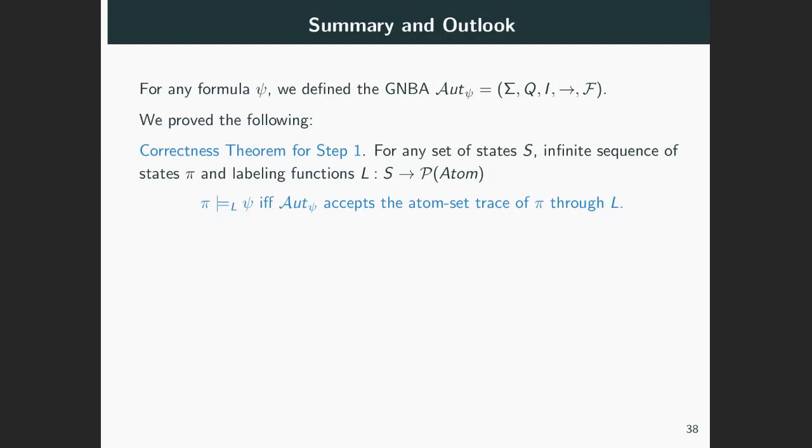Okay, to recap what we've done so far: for any formula ψ, we defined Aut_ψ, the GNBA—generalized non-deterministic Büchi automaton—associated to ψ. And about this automaton, we proved that satisfaction of ψ by a sequence is equivalent to the automaton accepting the atom-set trace of this sequence. This allows us to say that the automaton Aut_ψ mimics or simulates or encodes the semantic behavior of a formula ψ.